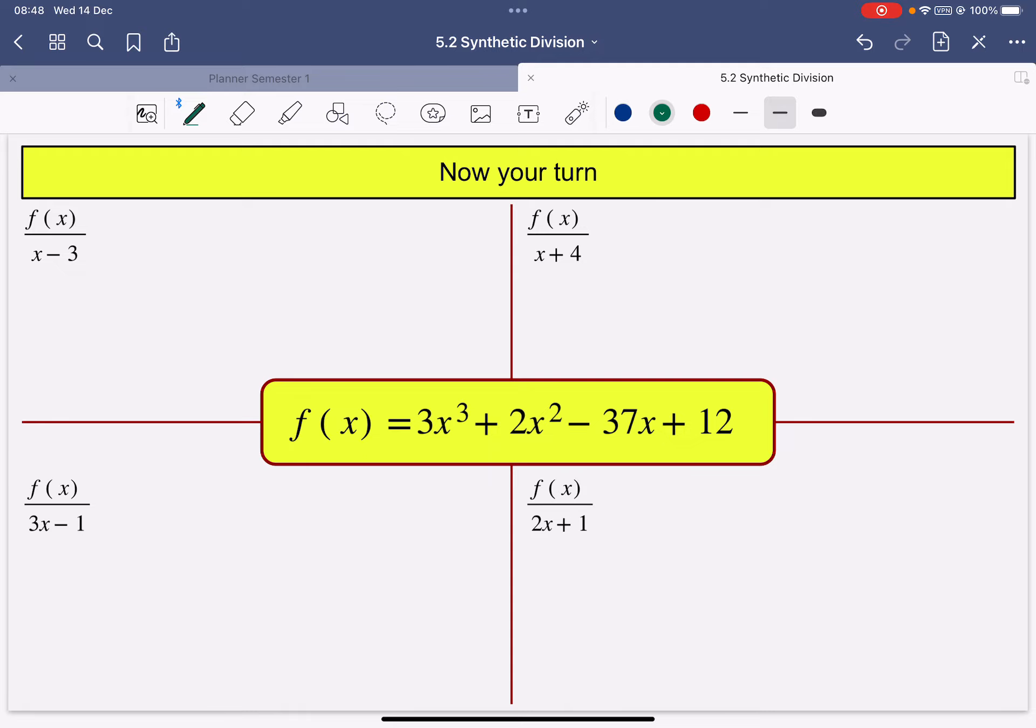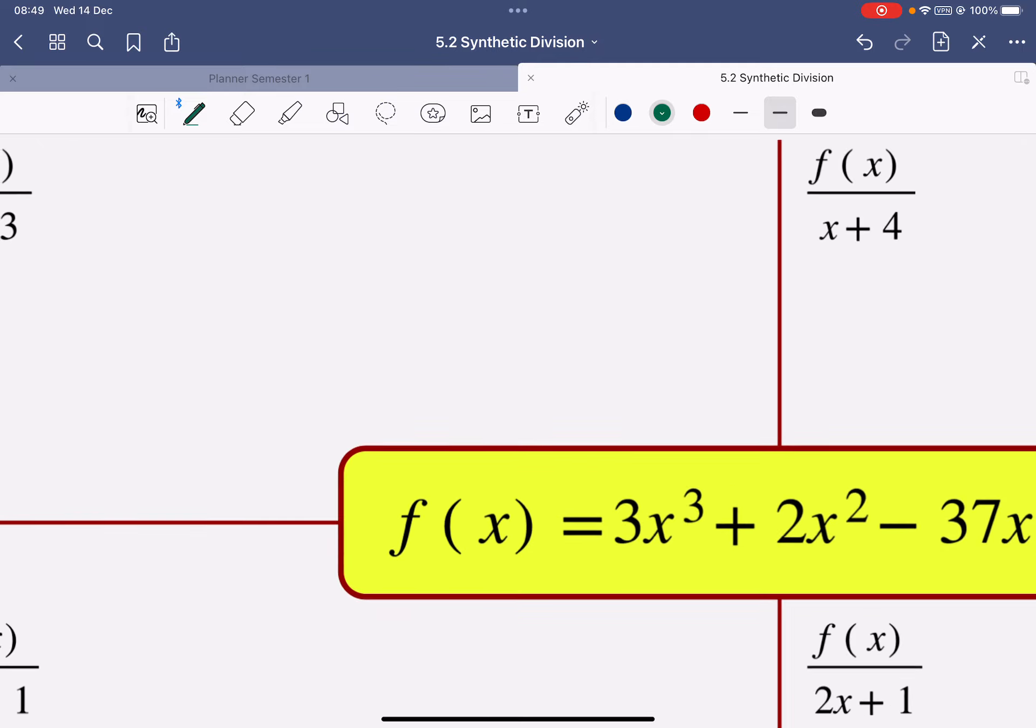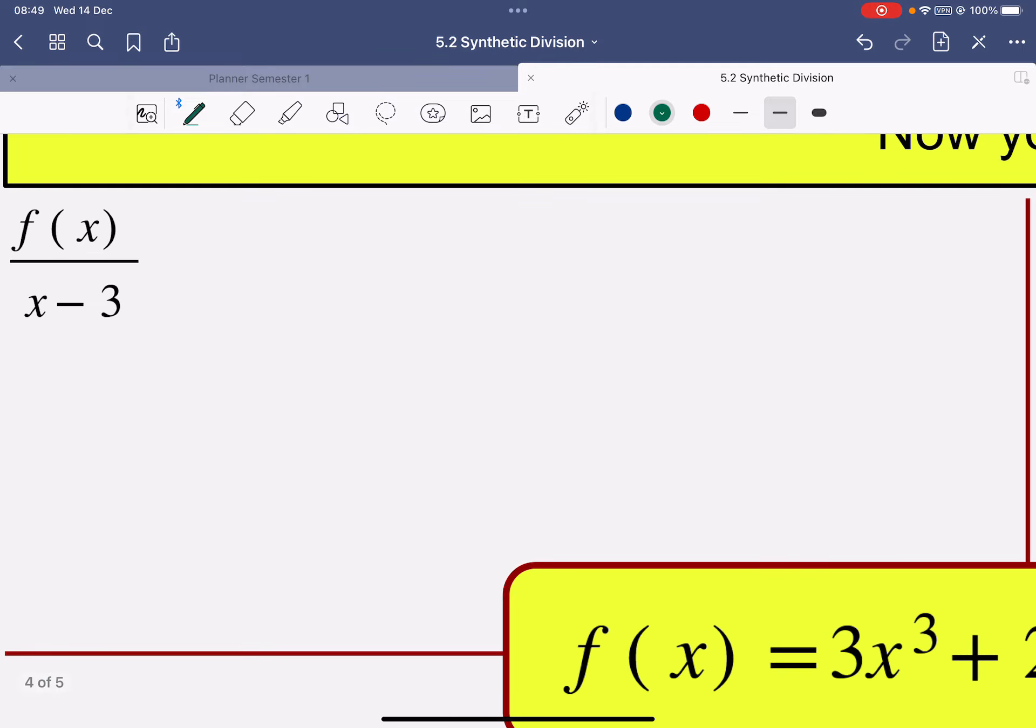So the first one, we're just going to copy down all of my coefficients, which is 3, 2, negative 37, and 12. And we're dividing by x minus 3. So we're actually going to put a 3 down here, not minus 3, but 3.